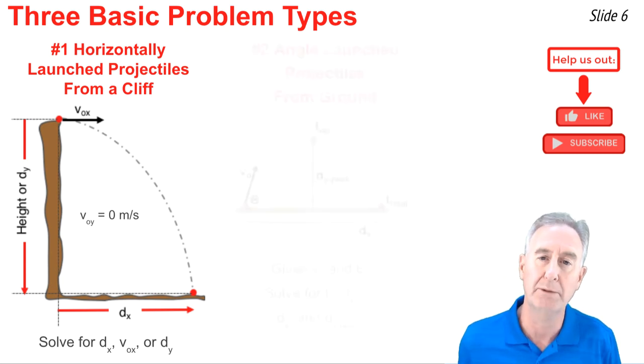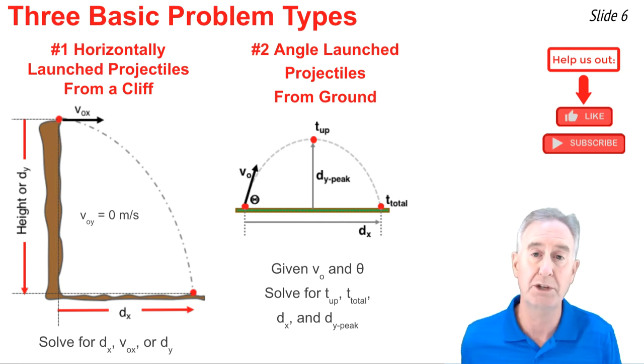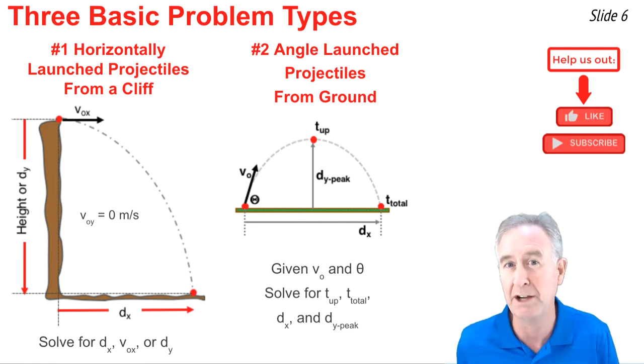The second type of problem is what I call an angle launched projectile problem. In these types of problems, you're typically given the original velocity and the angle of launch, and you have to quickly use your trigonometric functions we just discussed to find Vox and Voy.